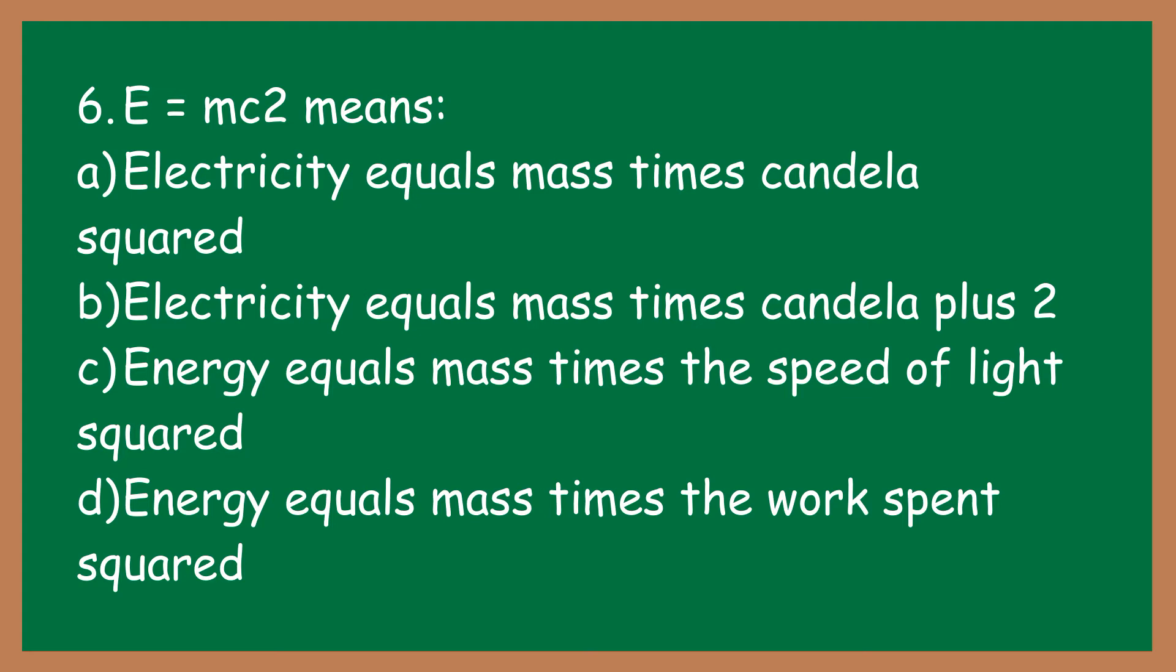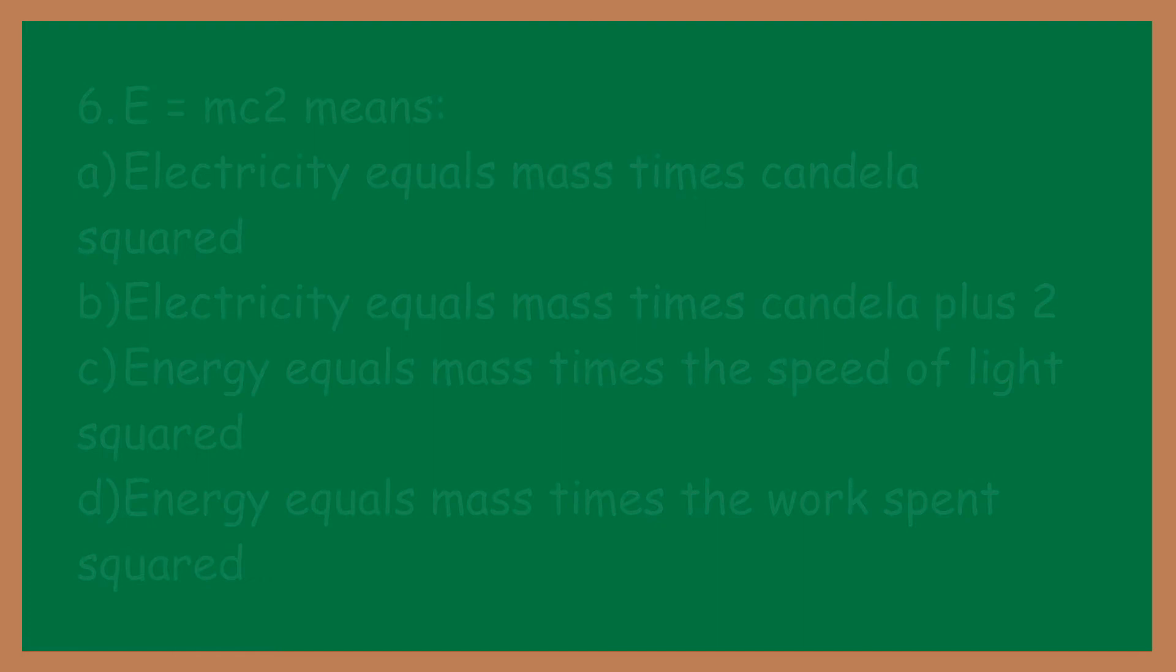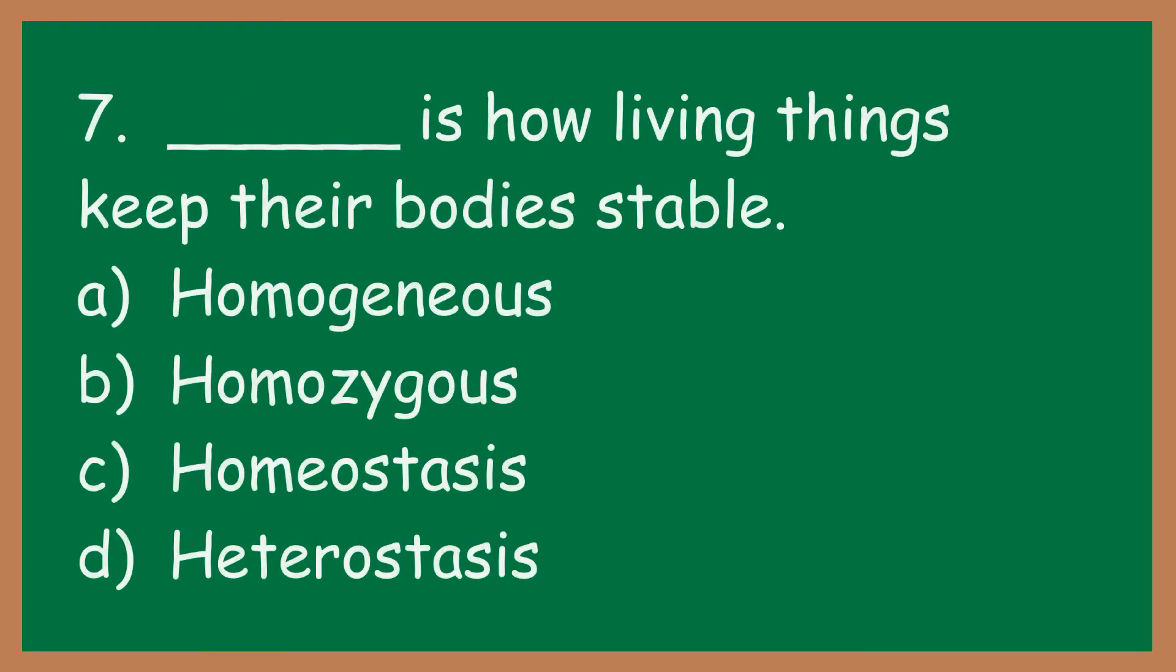Number seven: [Blank] is how living things keep their bodies stable. What word is blank? A) Homogeneous, B) Homozygous, C) Homeostasis, D) Heterostasis.